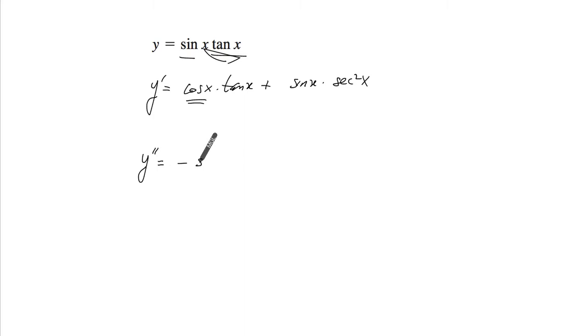Differentiate that, you get minus sine x tangent of x plus cosine of x. Differentiate that, we get secant squared x. So now we're done with the derivative of that.